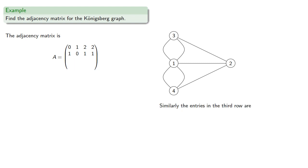Similarly, the entries in the third row are 2, 1, 0, 1, and the entries in the fourth row are 2, 1, 1, 0.